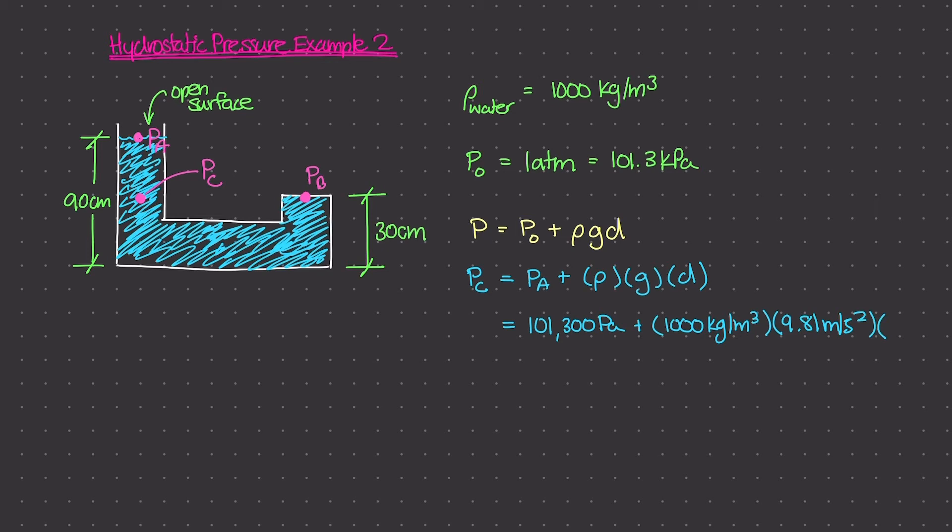Well, d is the depth of the pressure that you're studying. So if we're trying to figure out what the pressure at C is, the depth is really going to be from point A, which is at the open surface, all the way down to point C. So what is this depth right here? That's the depth that we're looking at. Well, 90 minus 30 is 60, and 60 centimeters converted into meters is 0.6 meters. Now, this is where I want to kind of stop, and let's talk about units.